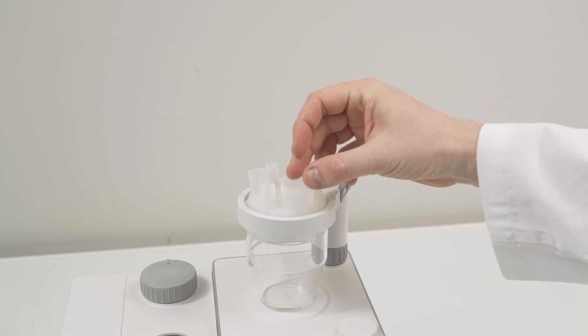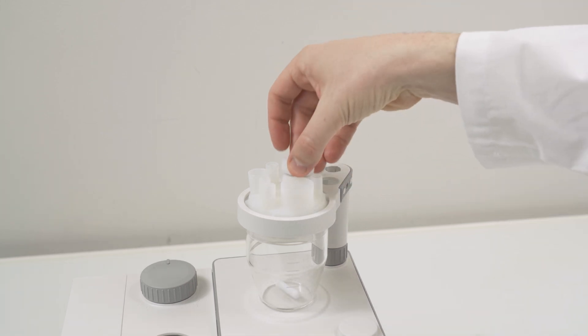Add the magnetic stir bar to the vessel and close the opening with the M24 stopper. Also here make sure that you close it properly.